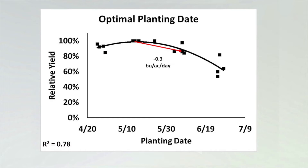Between mid-May and early June we have seen about 0.3 bushel per acre per day reduction in yield, and then after early June, if we get into a late June planting date, we start seeing a 0.7 bushel per acre per day reduction in yield. So the biggest takeaway here is that we want to plant early in the season and try to avoid those non-ideal conditions.